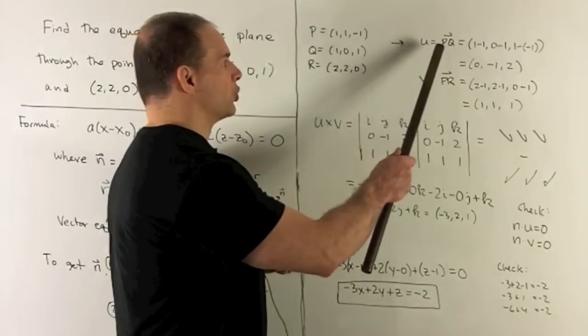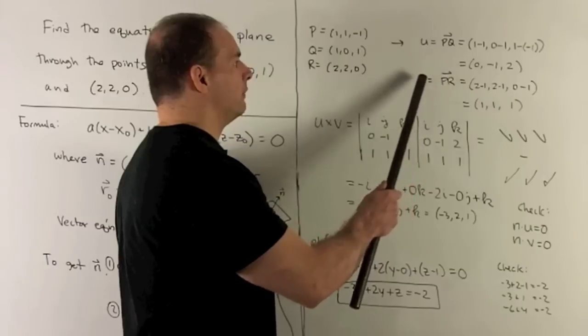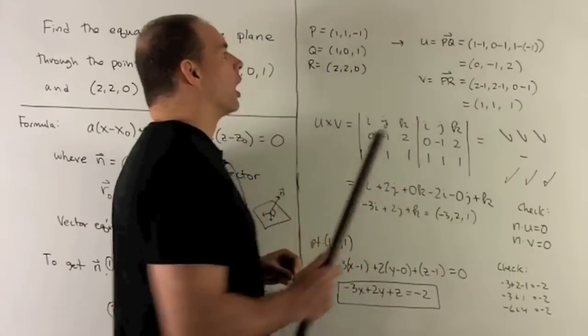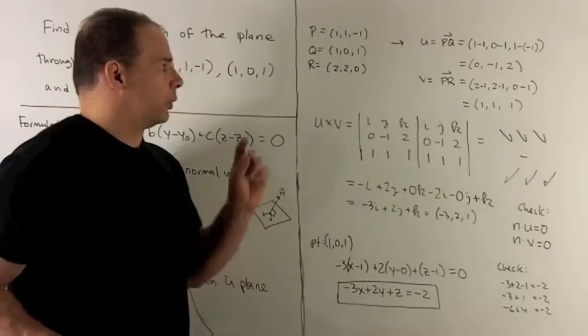Okay, U is going to be the vector joining P to Q. V will be the vector joining P to R. So what do we have here?